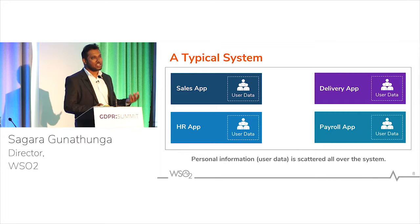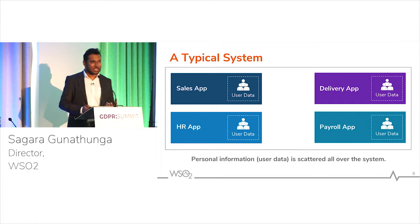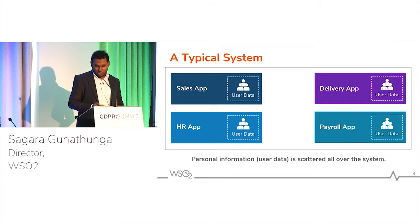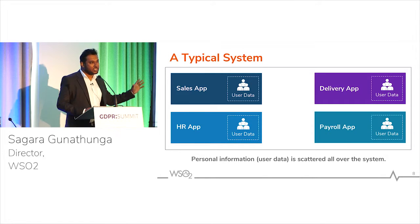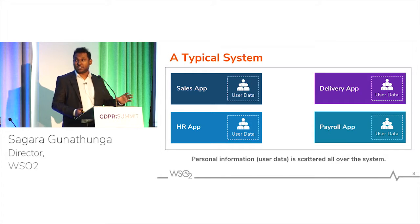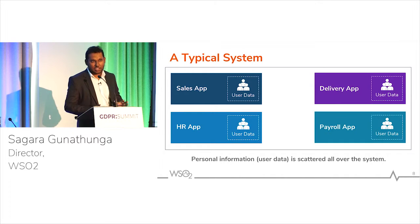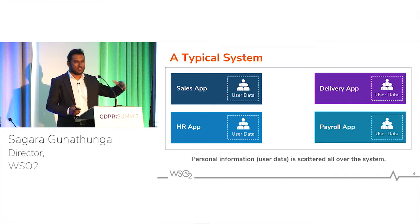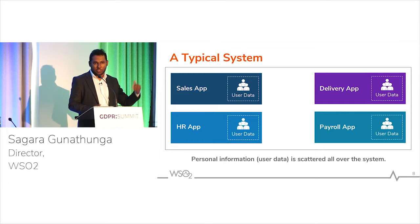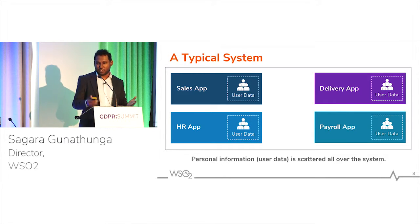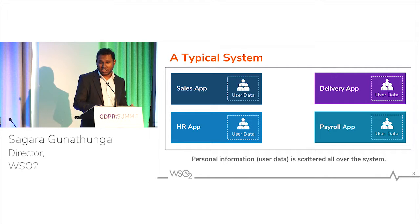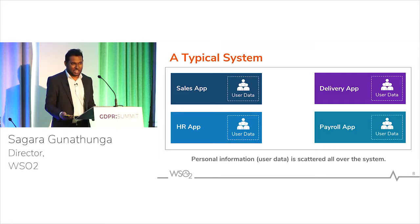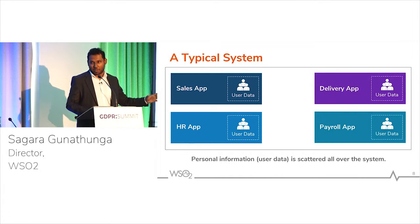We are going to discuss three patterns, or three best practices. Let's start with the first one. This is a typical oversimplified enterprise system — you can imagine your systems in your organization. Most of the time it looks like this: you may have a sales application, HR, payroll, and so on. You may have many applications. This is an oversimplified example.